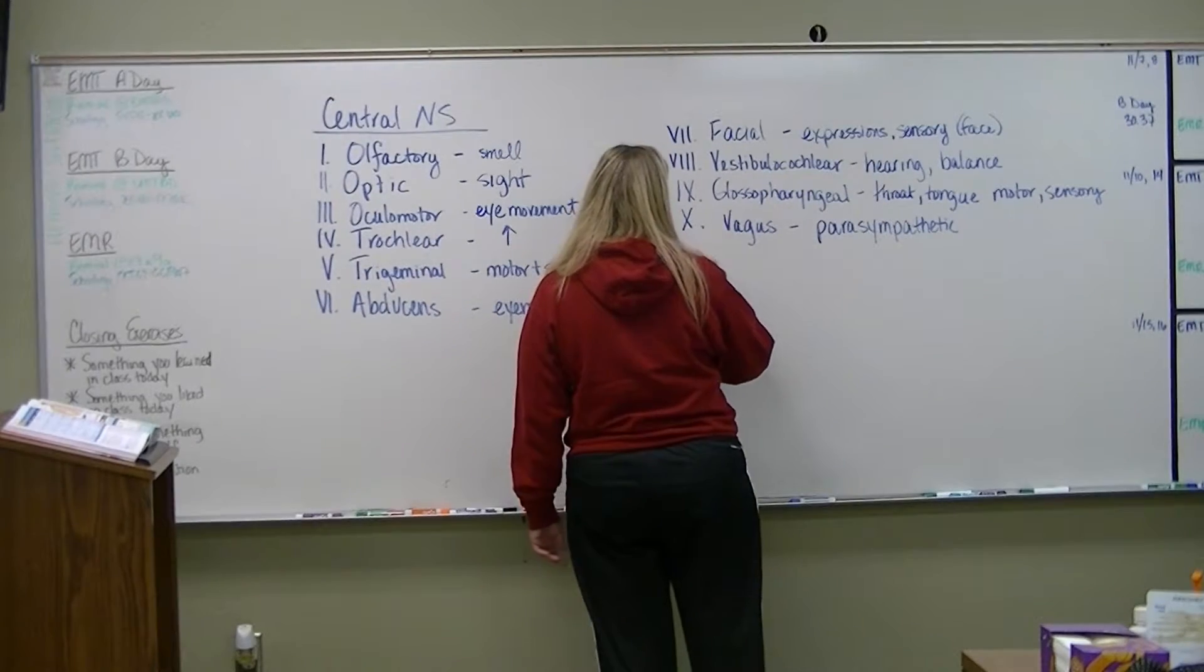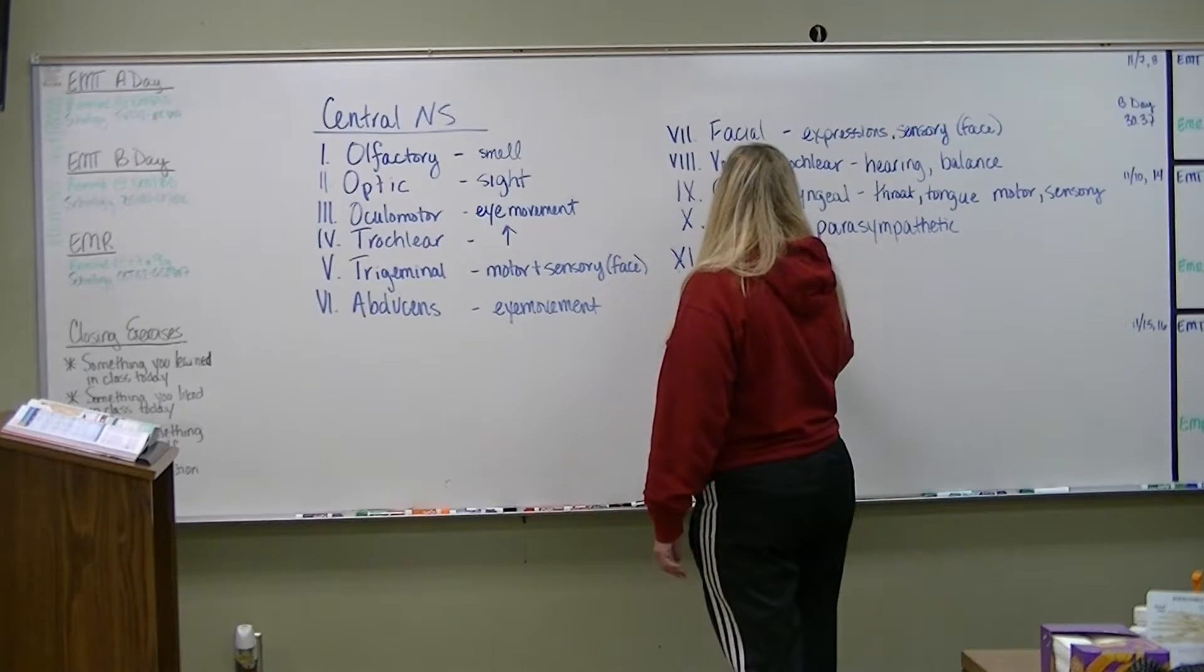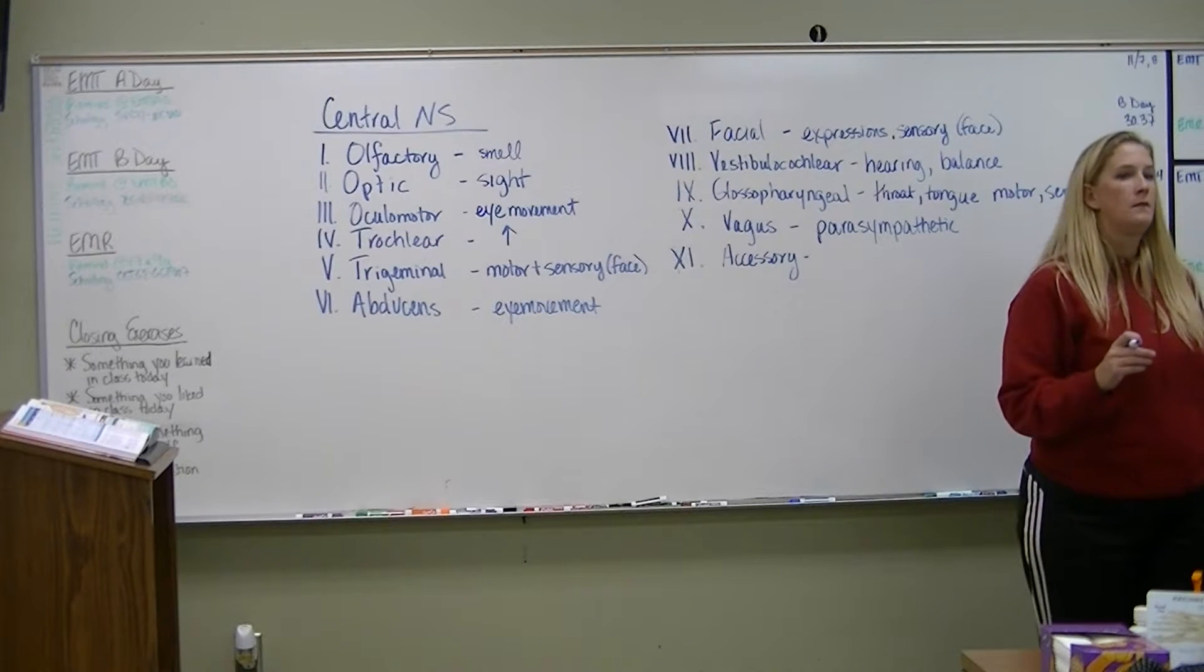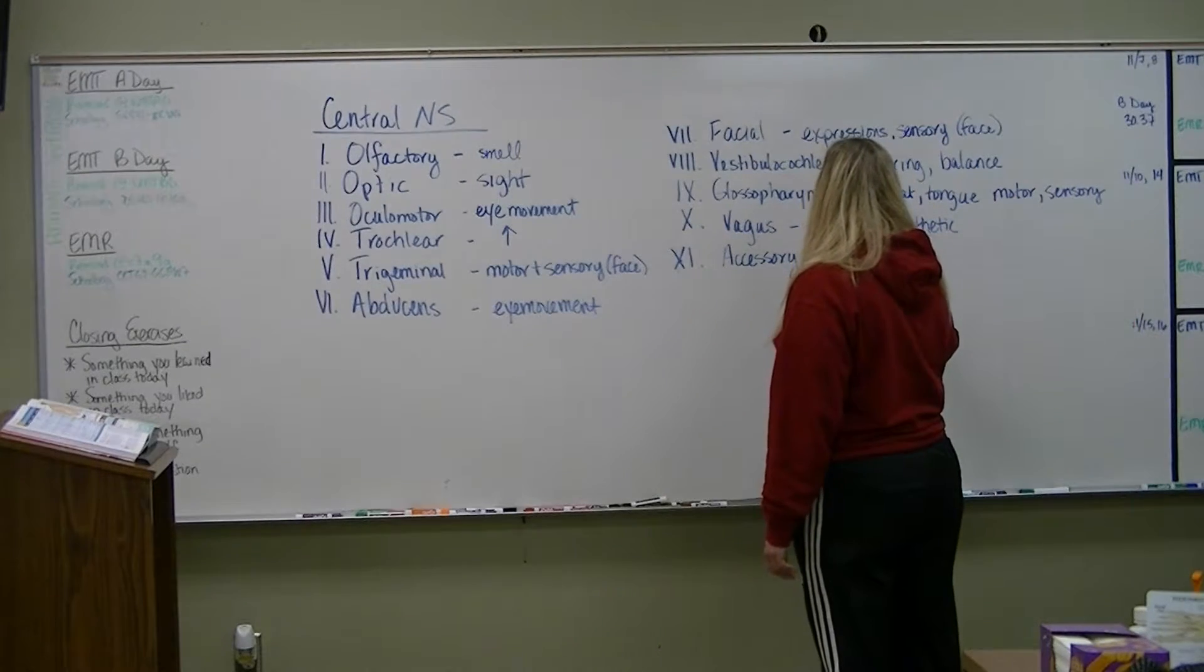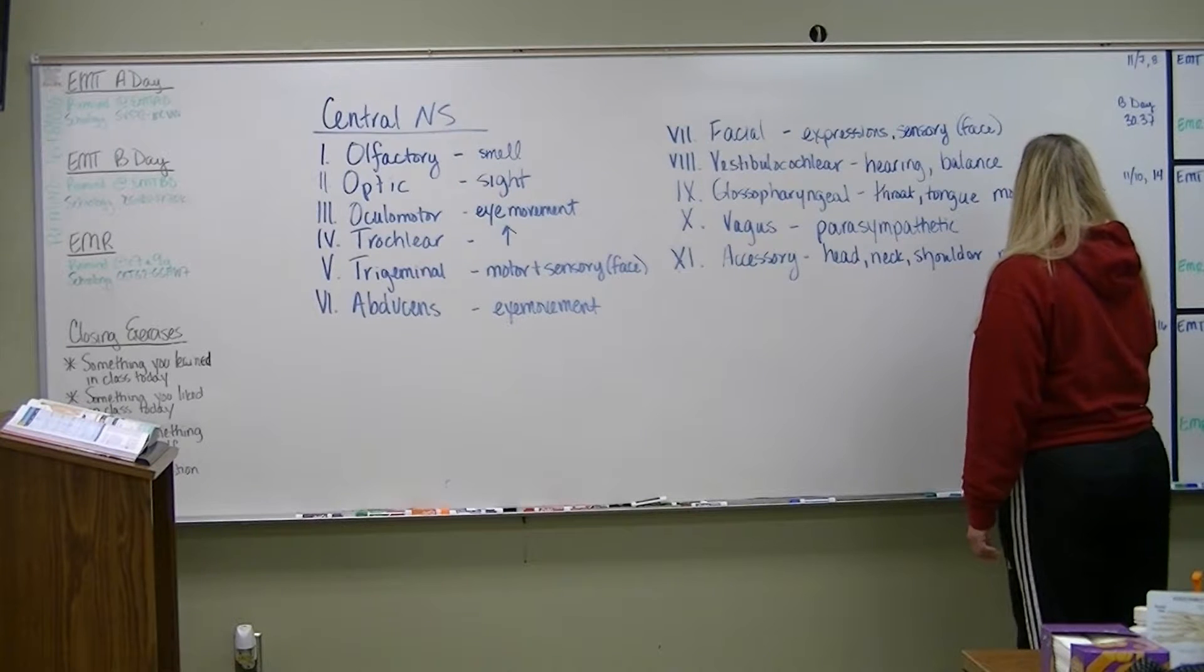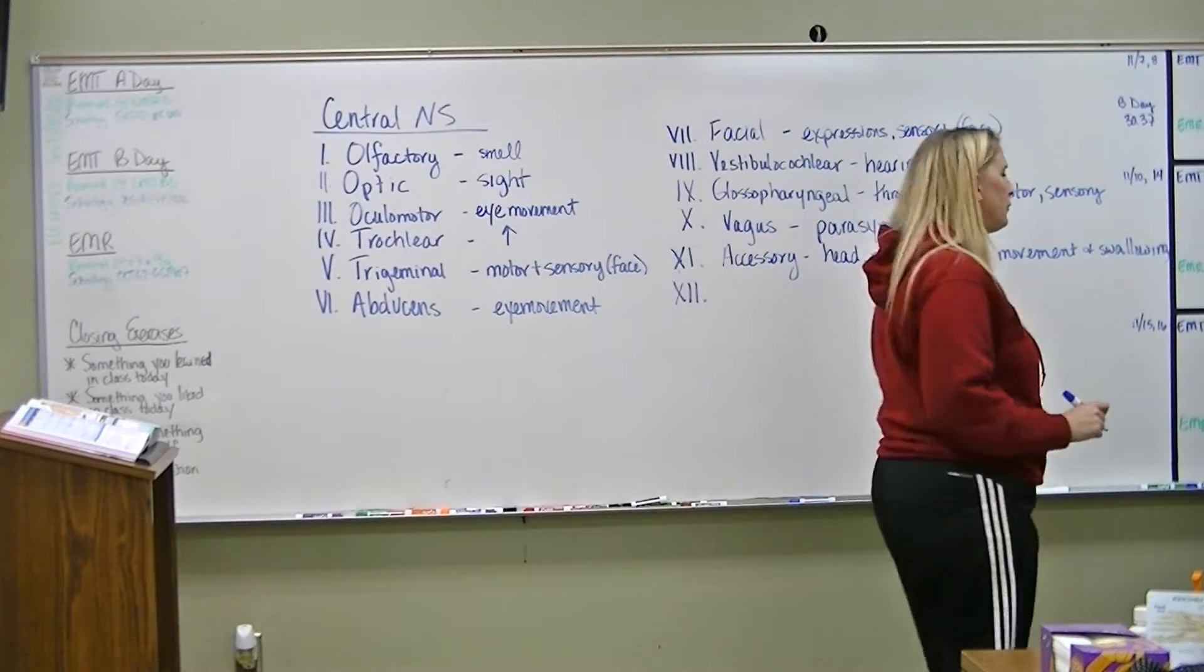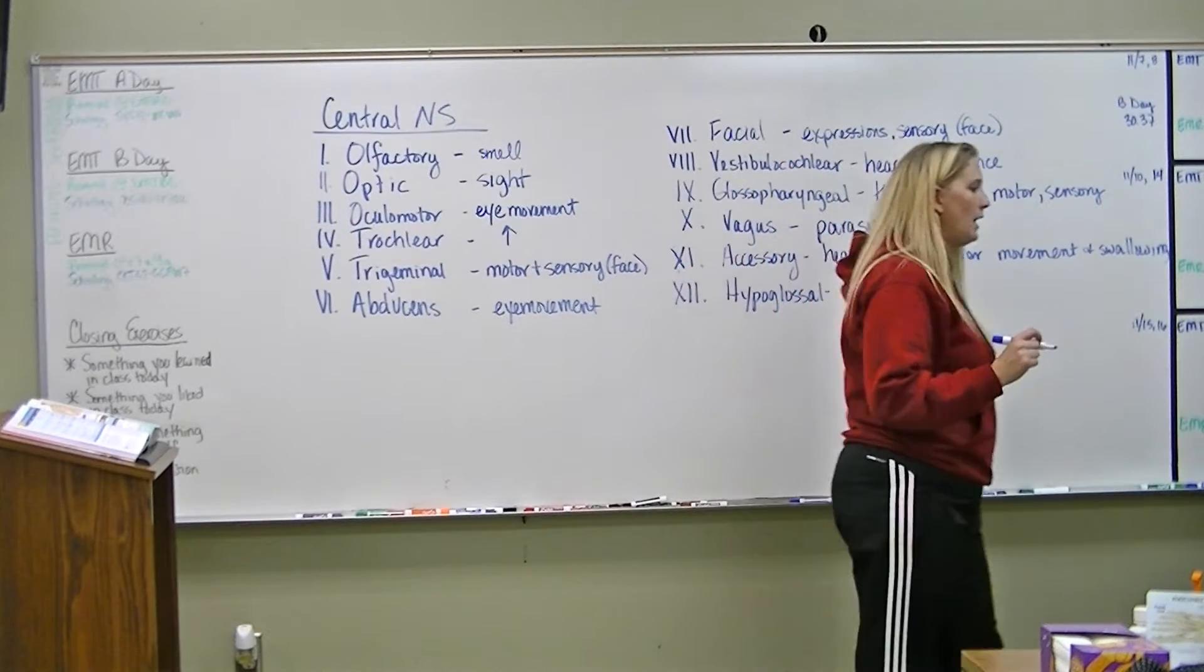Alright. Your eleventh nerve, that's a horrible x, is called the accessory nerve. What is the accessory nerve responsible for? It's responsible for head, neck, shoulder movement and swallowing. And then last, but definitely not least, our twelfth cranial nerve is our hypoglossal nerve. And what is that nerve responsible for?